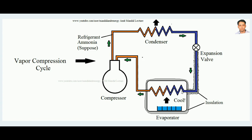In the evaporator, the ammonia absorbs the latent heat of vaporization and again becomes vapor. It enters in liquid form and comes out in vapor form. Since it is absorbing latent heat, the evaporator region cools — this is where the actual cooling action takes place. This vapor ammonia then goes back to the compressor, and the cycle repeats.